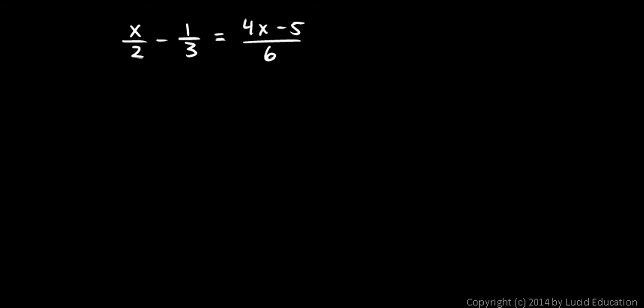The least common denominator here is 6, so I'm going to multiply both sides by 6. Over here on the right, I multiply by 6 — that's 6 over 1. You can even write it that way if you want to. That 6 cancels out, and the right side just becomes 4x minus 5.